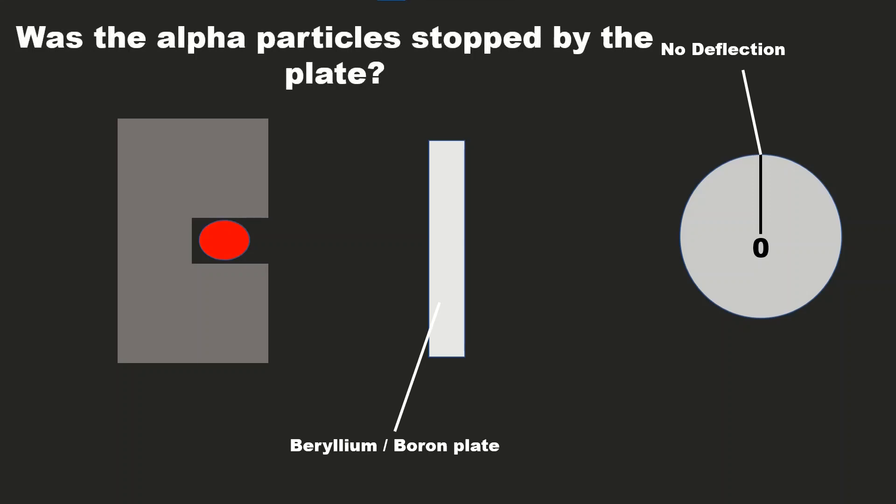You might think that alpha rays might have been stopped by the beryllium plate. Let's investigate his final step and come to a conclusion.